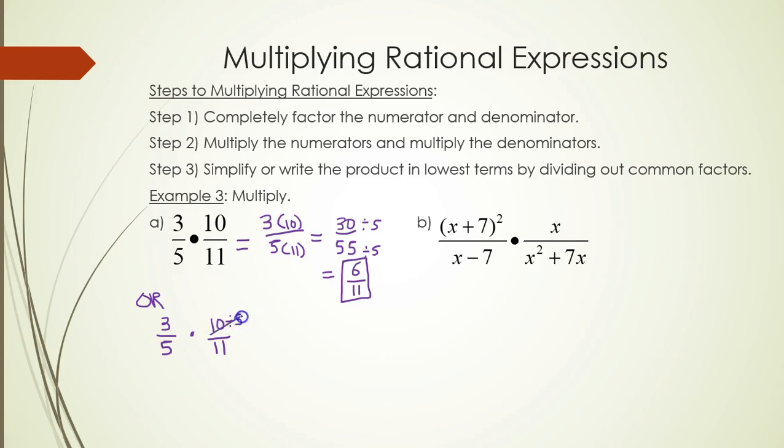So divide 10 by 5 to get 2. Divide 5 by 5 to get 1. You have 3 times 2 on top, 1 times 11 on the bottom. And look, you still get 6 over 11.